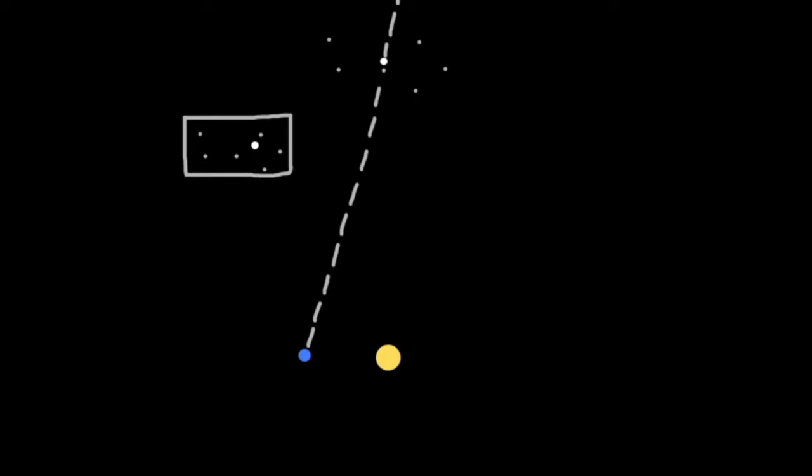To determine the parallax angle, we need more than just this information alone. We need one more measurement, so we wait six months for the Earth to travel to the other side of the sun and take another picture.